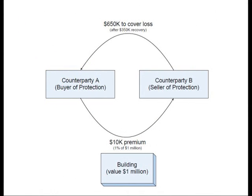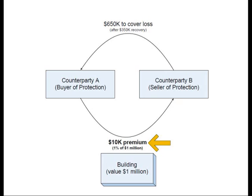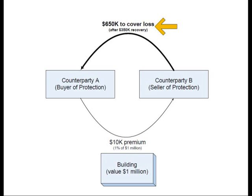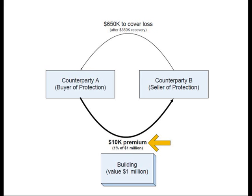A simple analogy with the selling of insurance protection on a building worth a million dollars may be helpful. Suppose counterparty A, who owns the building, desires to purchase fire and hazard insurance protection. Counterparty B is willing to sell the insurance protection for an agreed-upon premium amount — say, 1% of $1 million, or $10,000 per year. If the building burns down and the recovery amount is $350,000, then counterparty B will have to pay counterparty A $650,000. If, on the other hand, there are no loss events, counterparty B will be able to pocket the $10,000 annual premium for as long as the policy is in effect.